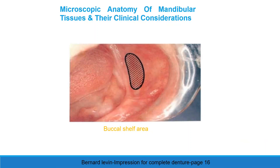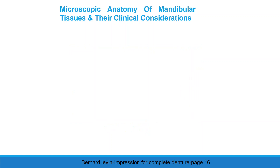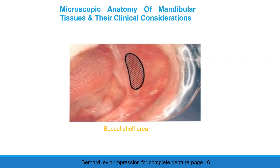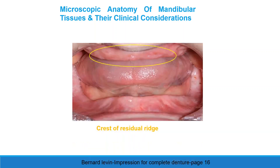Microscopic anatomy of mandibular tissue. Buccal shelf area. The part of the basal seat located posteriorly to the buccal frenum — the mucous membrane covering the buccal shelf area is more loosely attached and less keratinized, but it has attachment for fibers of the buccinator muscle, which are horizontally arranged. That is why this area is considered a primary stress-bearing area. Crest of the residual ridge: similar to the upper ridge, the submucosa is loosely attached to the bone, the underlying bone is cancellous and spongy, and hence relief should be provided on the lower residual ridge.